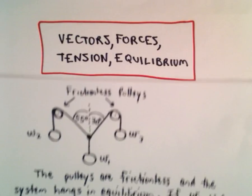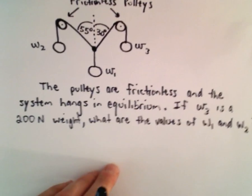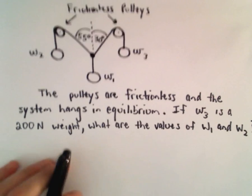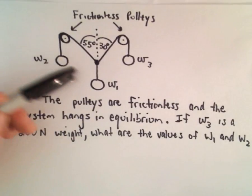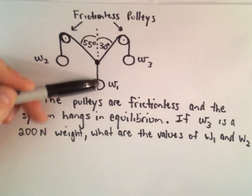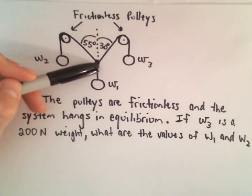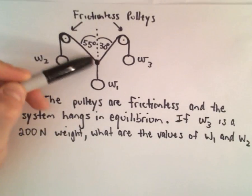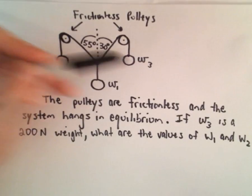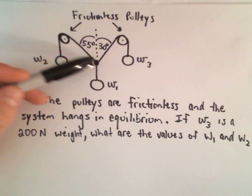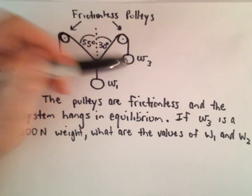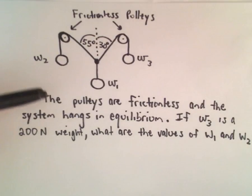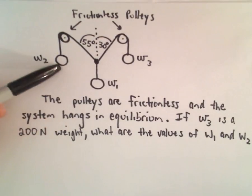Okay, here I'm going to do another example that you would see in physics where we have a system in equilibrium. So what we have here is we have a system of three weights, one, two, three. The first weight is connected by a string to some knot. And then on that knot we have two cords connected to weight two and weight three. And these go around some frictionless pulleys. The pulleys are frictionless and the system hangs in equilibrium. If we know that the third weight is a 200 Newton weight, we want to find what are the values of W1 and W2.